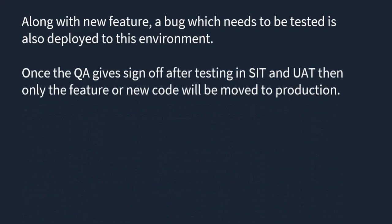Once the QA gives sign-off after testing in SIT and UAT, then only the feature or new code will be moved to production. This is a critical point — until and unless the QA gives sign-off, it will not move to production. Once we verify that everything is working fine and looks good, then only we give the sign-off.